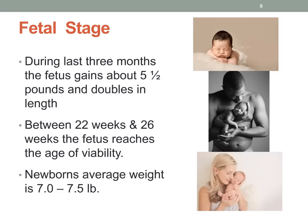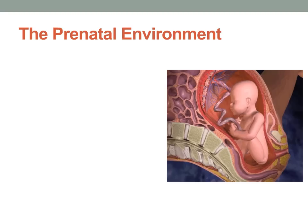During the last three months, the fetus gains an enormous amount of weight — about five and a half pounds — and doubles in length. Between around 22 and 26 weeks, the fetus reaches the age of viability, meaning that if born at this time, it would likely survive without major health or psychological problems. On average, newborns weigh around seven to seven and a half pounds, but there's a lot of variability — some perfectly healthy children are born weighing much less or more.